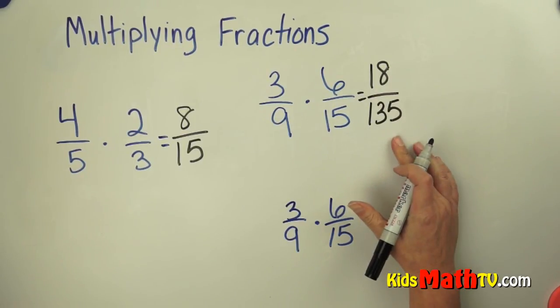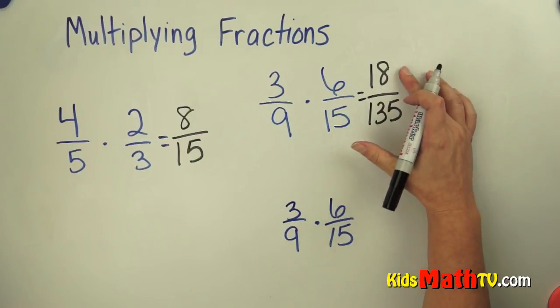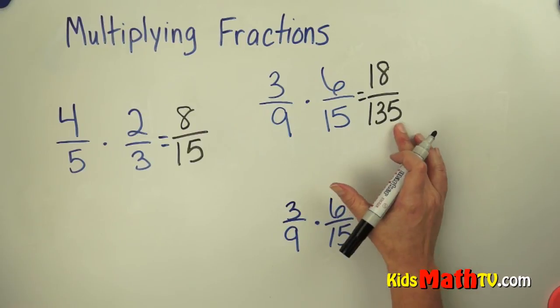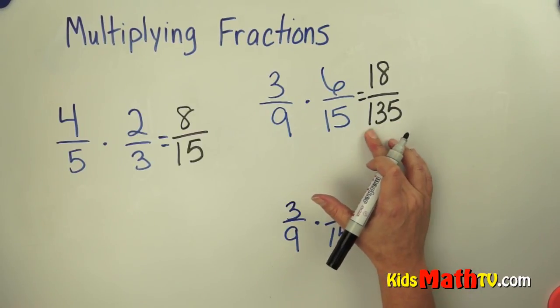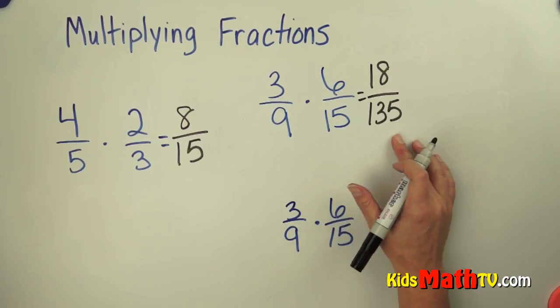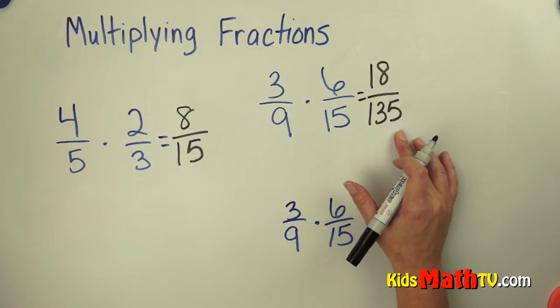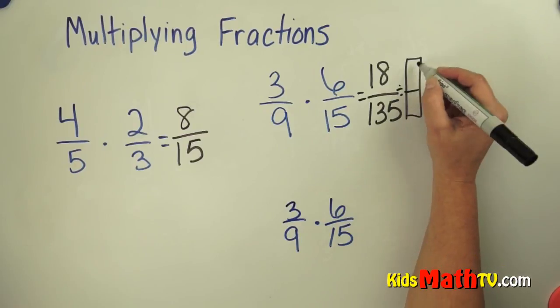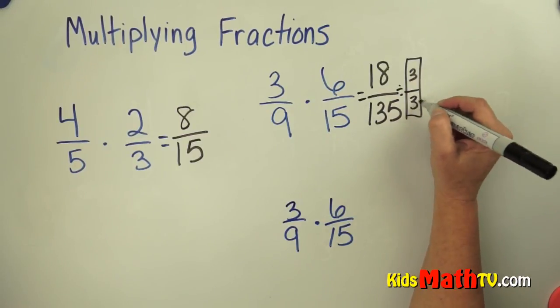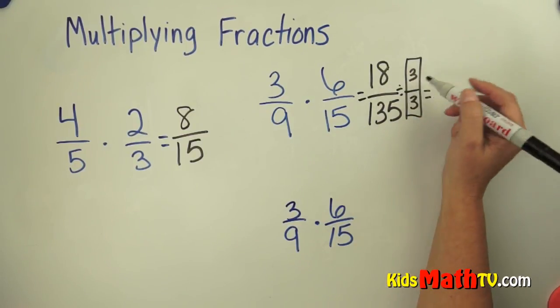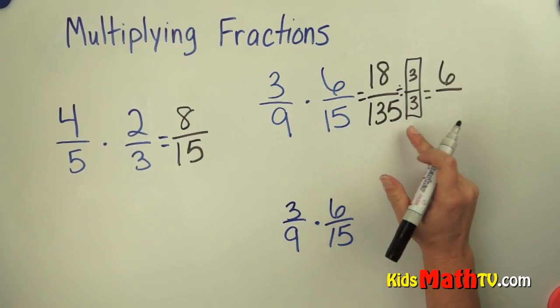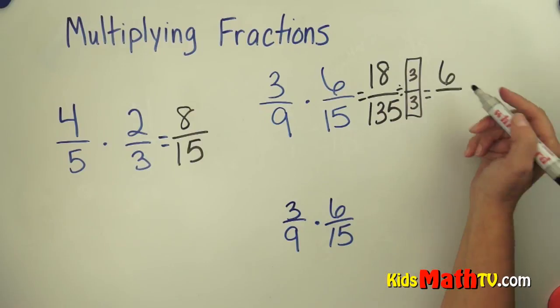Now we have to see if we can reduce this or simplify it. I know that 3 will divide here. If I add these numbers up, 5 plus 3 is 8, plus 1 more is 9. So 9 divides by 3 using our rules of divisibility. So I am going to divide by 3 over 3. And 18 divided by 3 is 6. 135 divided by 3 is 45.